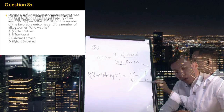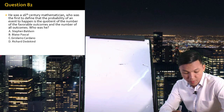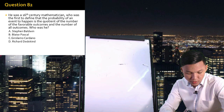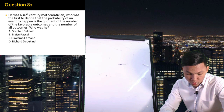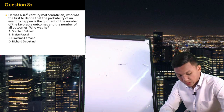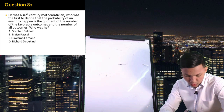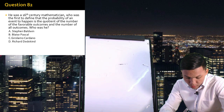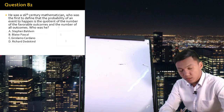Number 82: He was a 16th century mathematician who was the first to define the probability of an event to happen as the quotient of the number of favorable outcomes and the number of all outcomes. Who was he? The correct answer is Blaise Pascal.